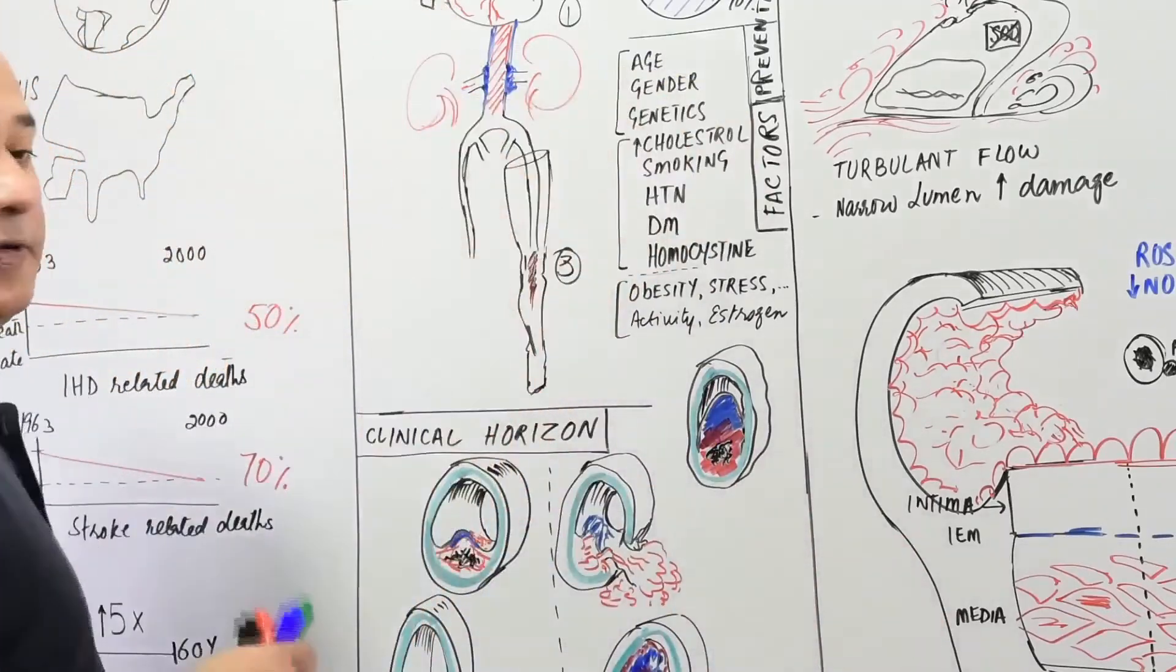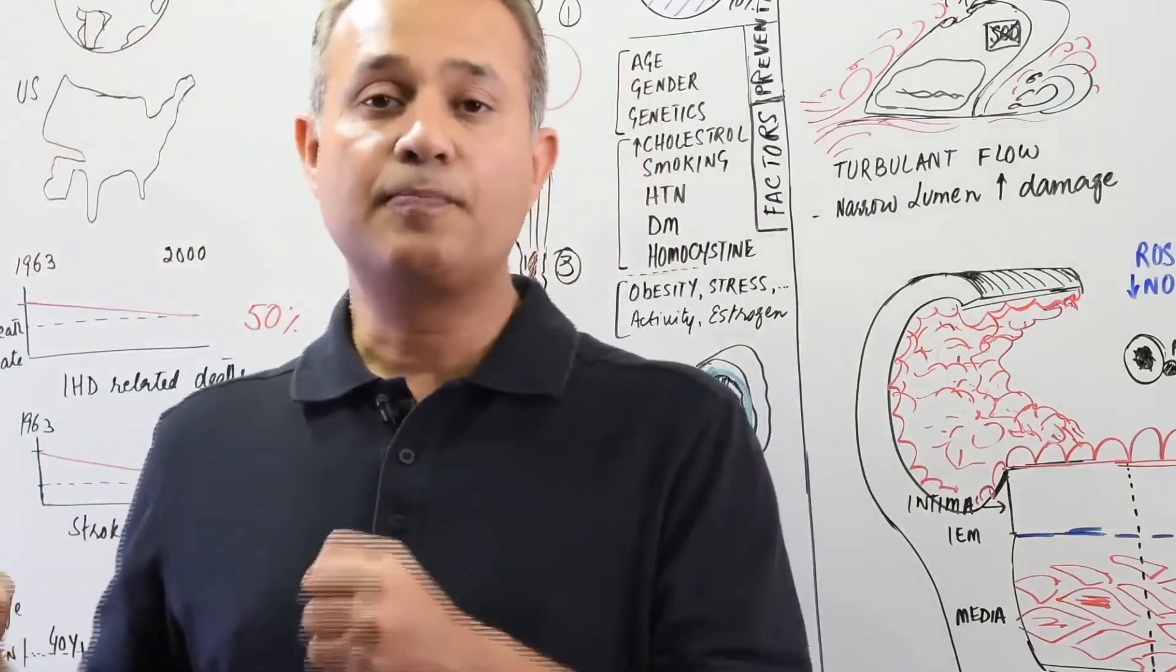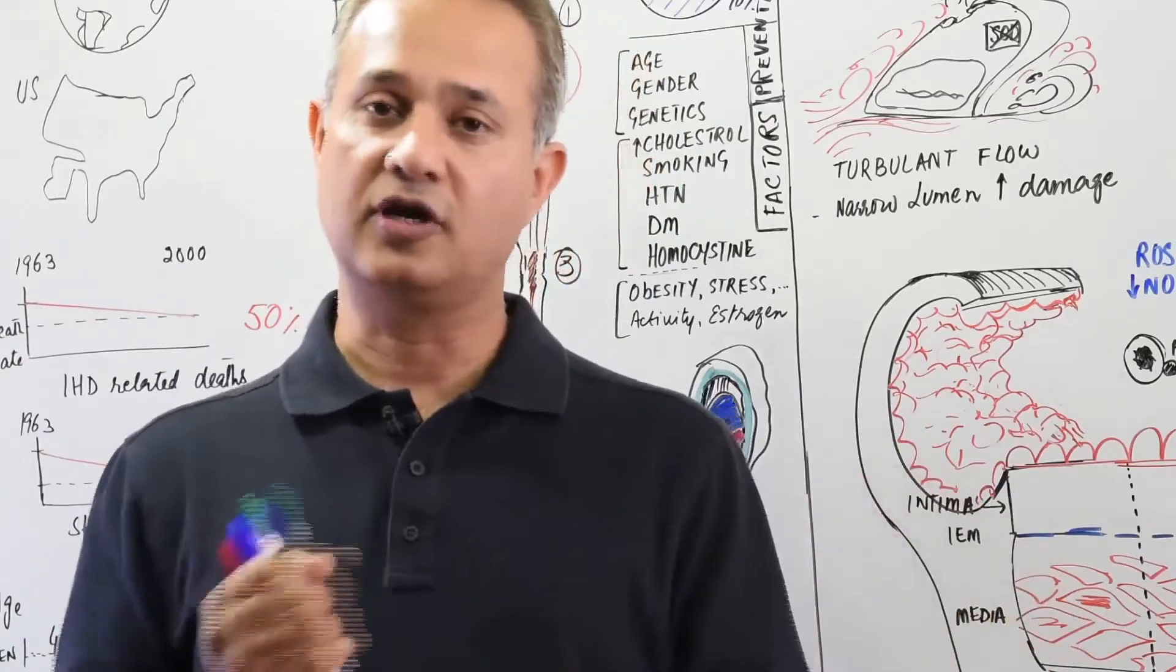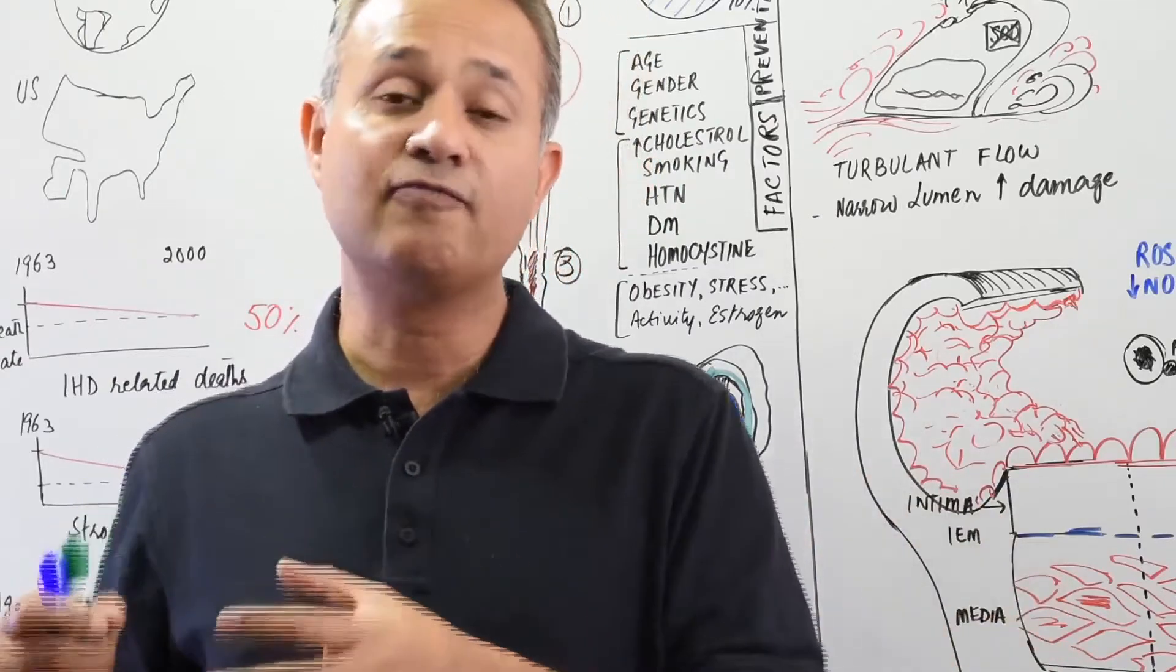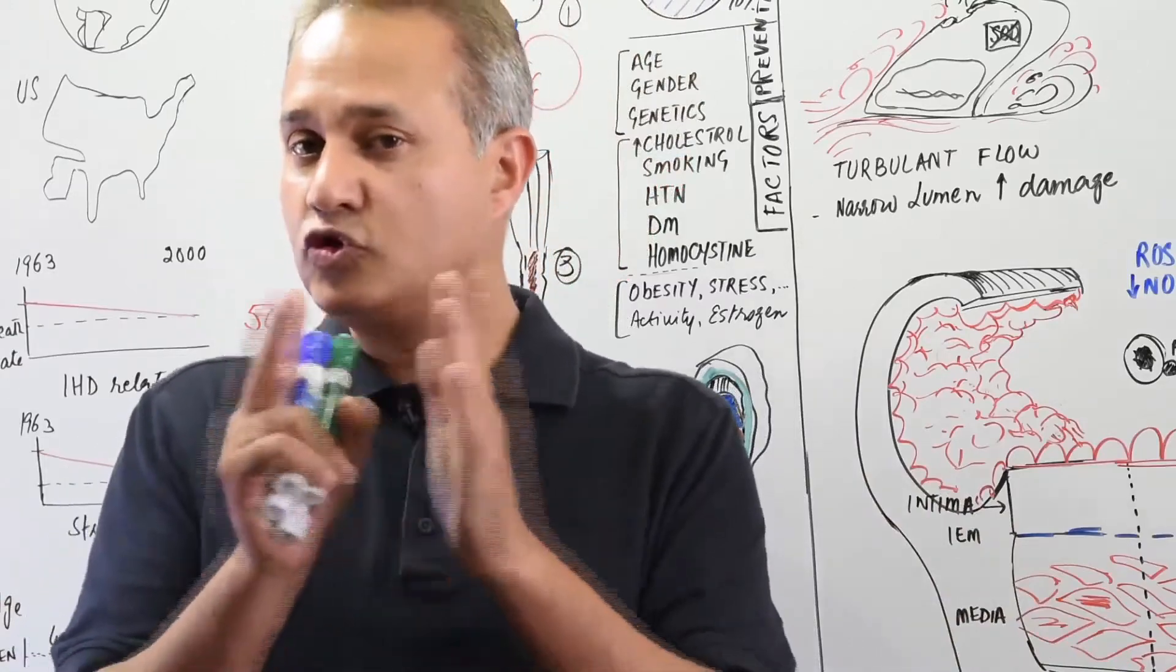But the genetic makeup somehow favors females to not have or to have lesser incidence of atherosclerosis. Then genetics, there are hereditary propensities of people to have atherosclerosis or not, or to have more risk of atherosclerosis or less. And that can be two types.